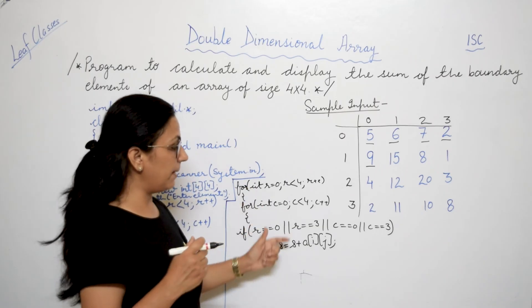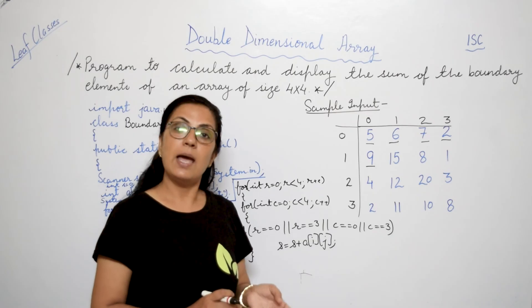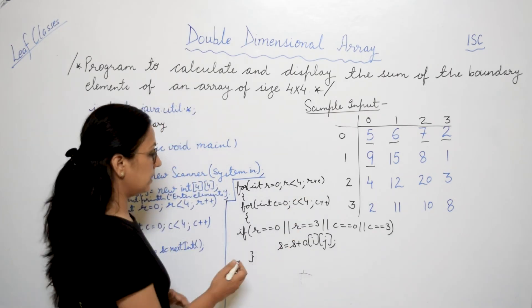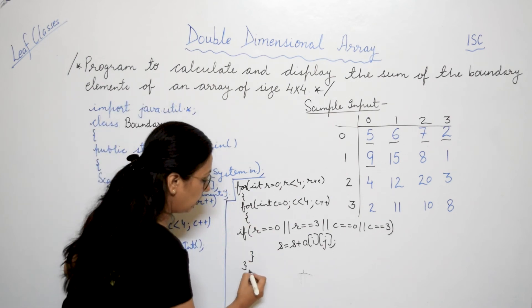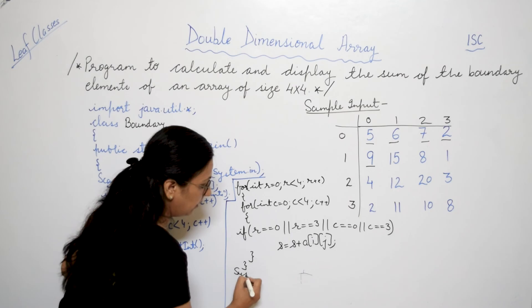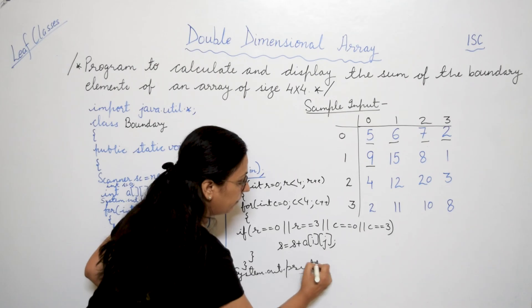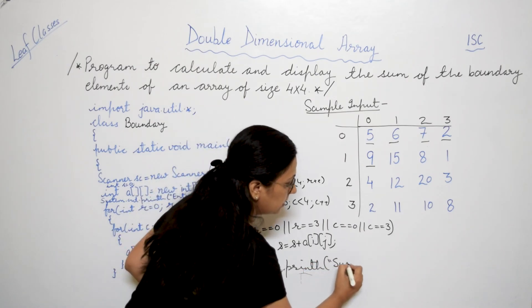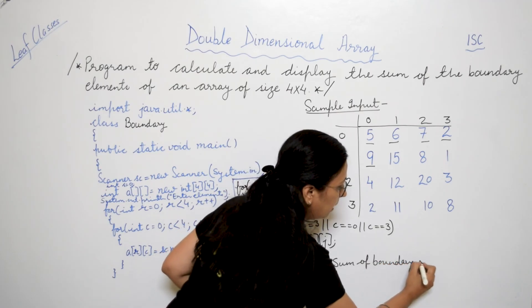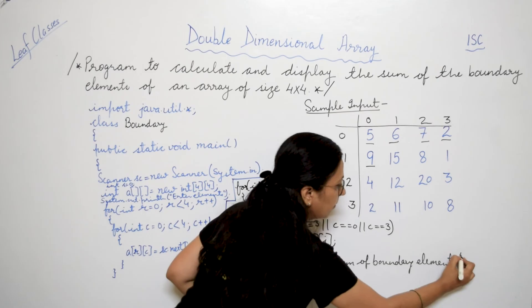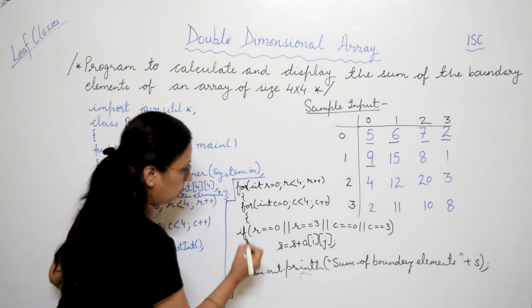So the same logic will be applicable to all the elements of the double dimensional array in this case. And finally, after execution of this nested loop, we will get the sum of the boundary elements. So here simply you can print, print statement: system.out.println, sum of boundary elements plus s. And then you close main and then you close class.